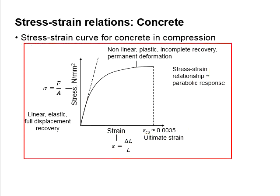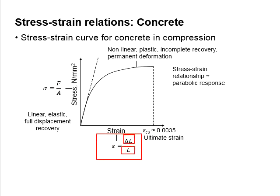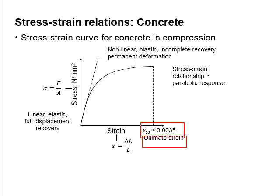This figure shows a typical stress-strength curve of a concrete in compression. The stress is determined by the force per unit area of the concrete, while the strength refers to the deformations over the original size of the member. The stress increases as the strength increases, and the relationship is close to a parabolic response. The ultimate strength of the concrete is about 0.0035, meaning it is about 0.35% of the original size of the concrete.